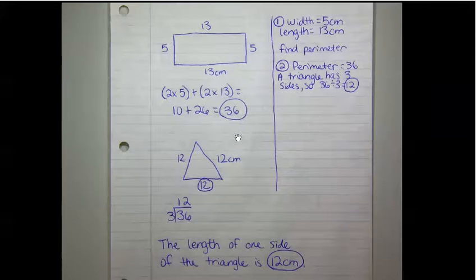Then the wire is unbent and rebent into a triangle. To figure out the length of each side of the triangle, we take 36 divided by 3, which is 12. So the length of each side is 12 centimeters.